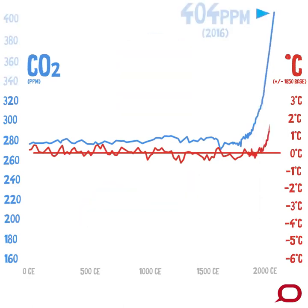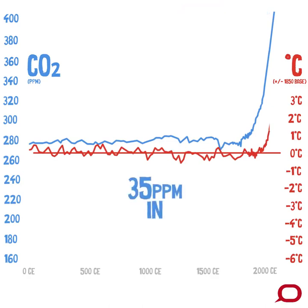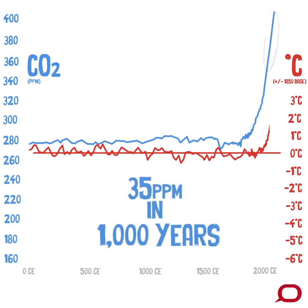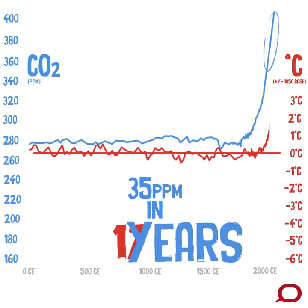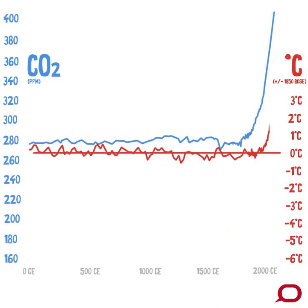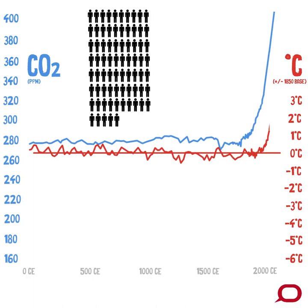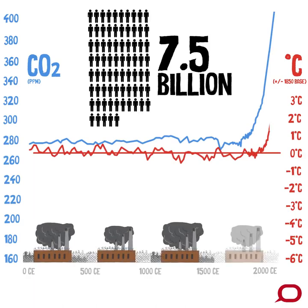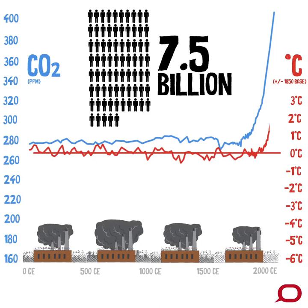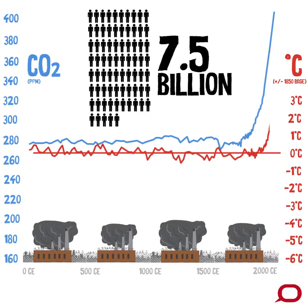Here's where we are now. When the Earth warmed out of the last ice age, CO2 levels naturally increased by 35 parts per million over 1,000 years. Humans have caused CO2 to rise by this amount in just the last 17 years. And our population is at 7.5 billion people, with many cities around the world rapidly developing, increasing their CO2 output year on year.